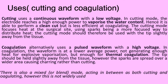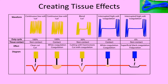In blend mode, it has an interrupted waveform, allowing for slower cutting and coagulation at the same time, creating a combined tissue effect. This is the electrosurgical pencil — you can see the yellow and the blue button. The yellow activates the cut function and the blue activates the coagulation function. Cutting mode has a continuous frequency with low voltage — not as high as coagulation mode — and is active 100% of the time.